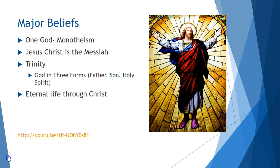The major tenet of Christianity is that it is a strict monotheistic religion, meaning Christians only believe in one God. To Christians, Jesus Christ is the Messiah, or the Anointed One — he was the Son of God. Christians believe in the concept of the Trinity, or God in three forms: the Father, or God in heaven; the Son, Jesus Christ, in human form; and the Holy Spirit, which guides and works through its followers. The core tenet of the faith is that if you believe that Jesus was Christ and the Messiah, then you will have eternal life in heaven — meaning that when you die, if you believed in Christ, you will go to heaven.